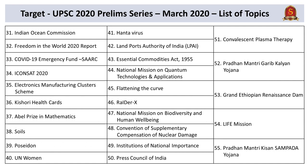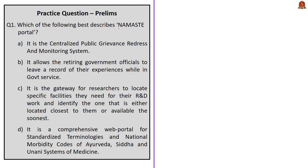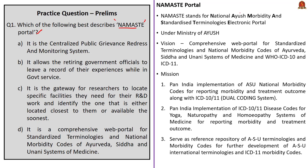Let us move on to the first question for this series. The first question is based on the NAMASTE portal. Always remember that if a new technology or electronic portal of the Government of India is given in the question, and if you know the full form of the acronym, you can easily arrive at the correct answer. The full form of NAMASTE in this portal is National Ayush Morbidity and Standardized Terminologies Electronic Portal.